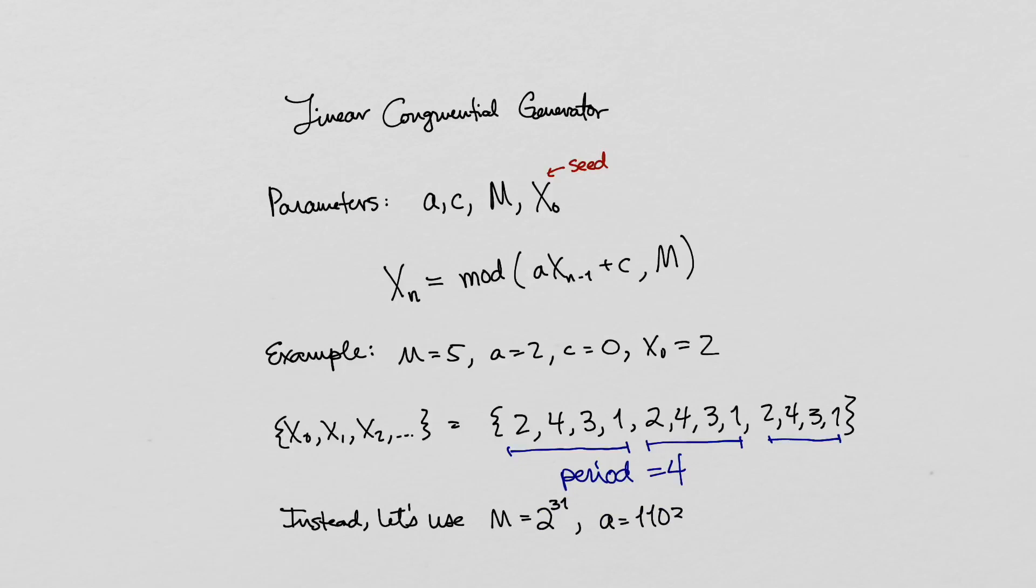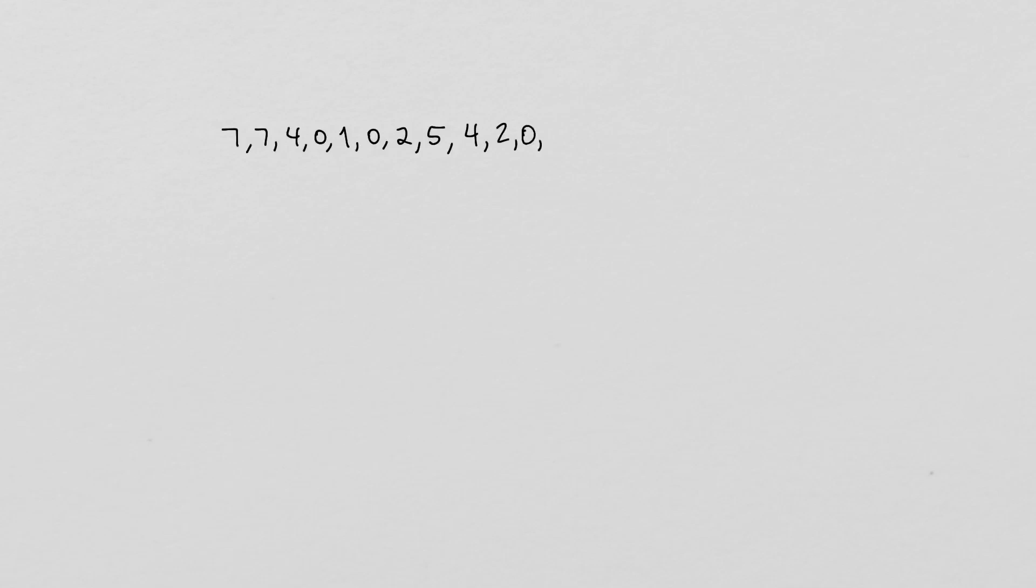For example, standard C compilers use this particular a value and c value. These values were chosen because the resulting sequences have desirable properties. In other words, they behave similarly to random sequences in many important ways.